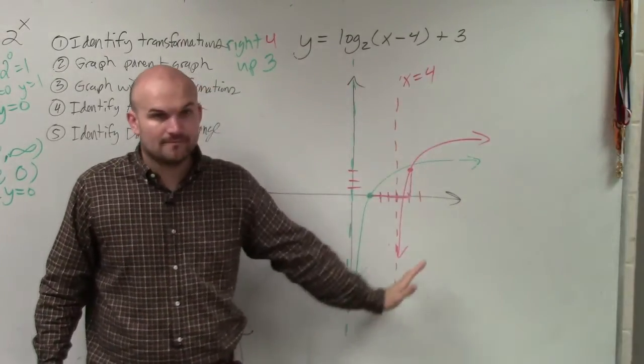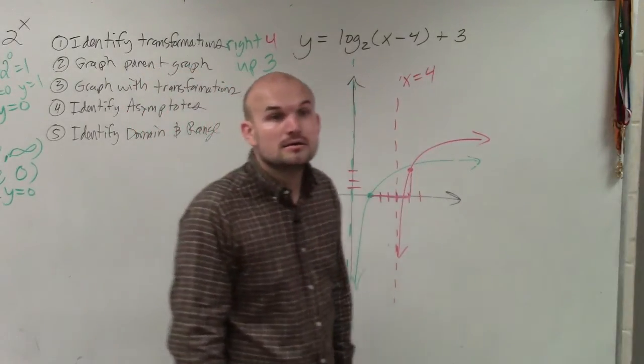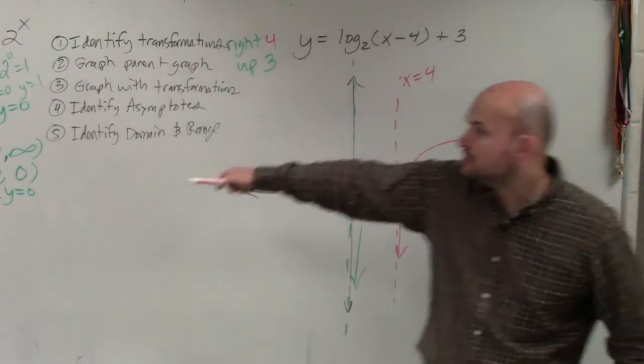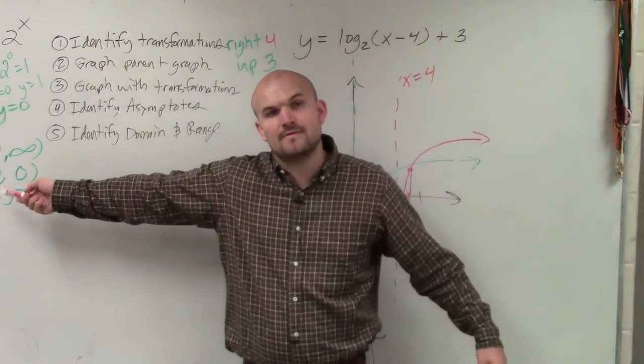So now, the asymptote is at 4. In the logarithm, the asymptote is vertical. In exponential, the asymptote is horizontal, OK?